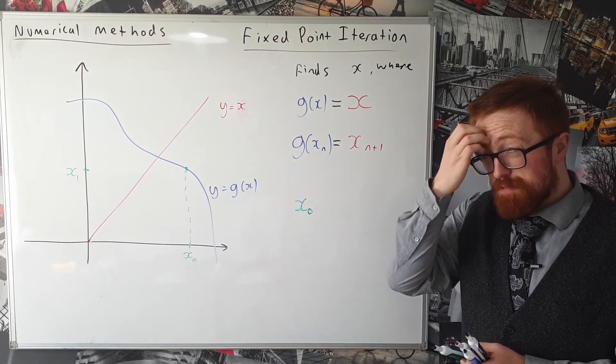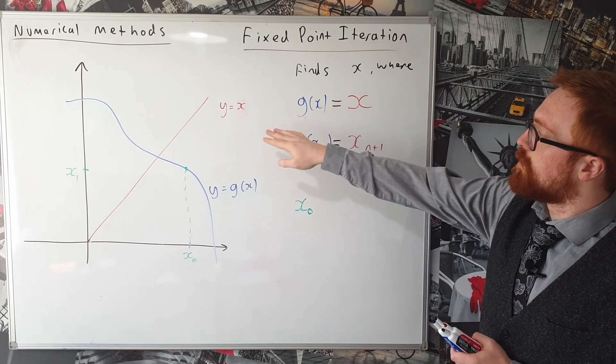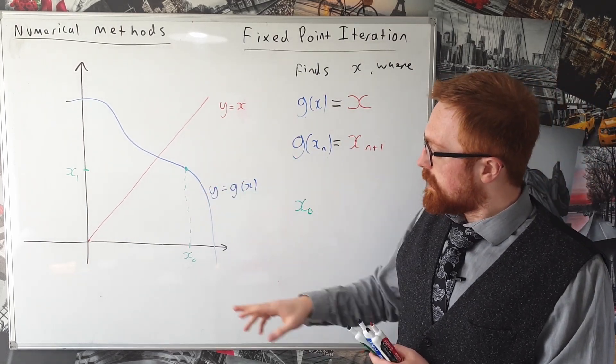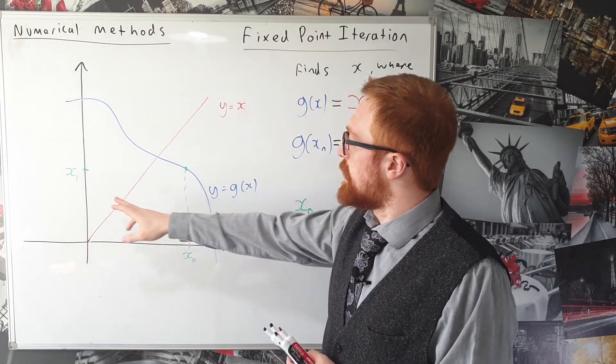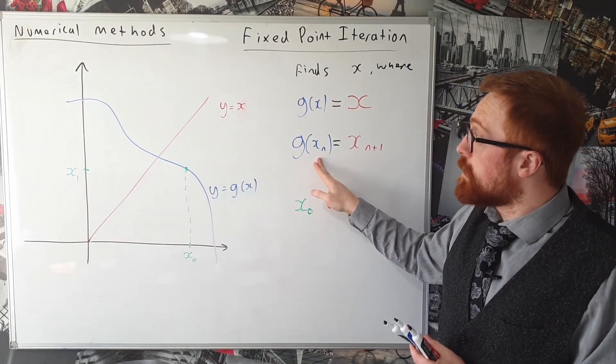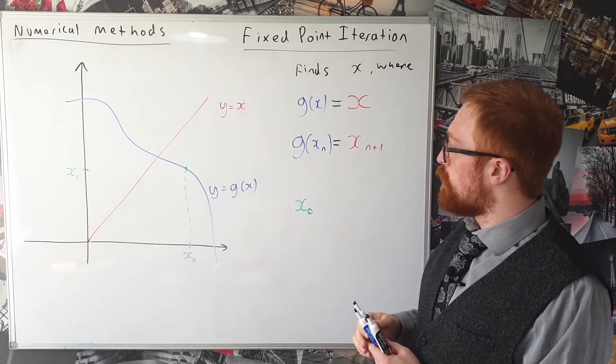Okay now the glory of this method and the reason it's so powerful is this y equals x. So what we'd normally have to do now is take this x_1 and plug it back into here and that is what we're going to do but the diagram allows us to represent this in a really powerful way.